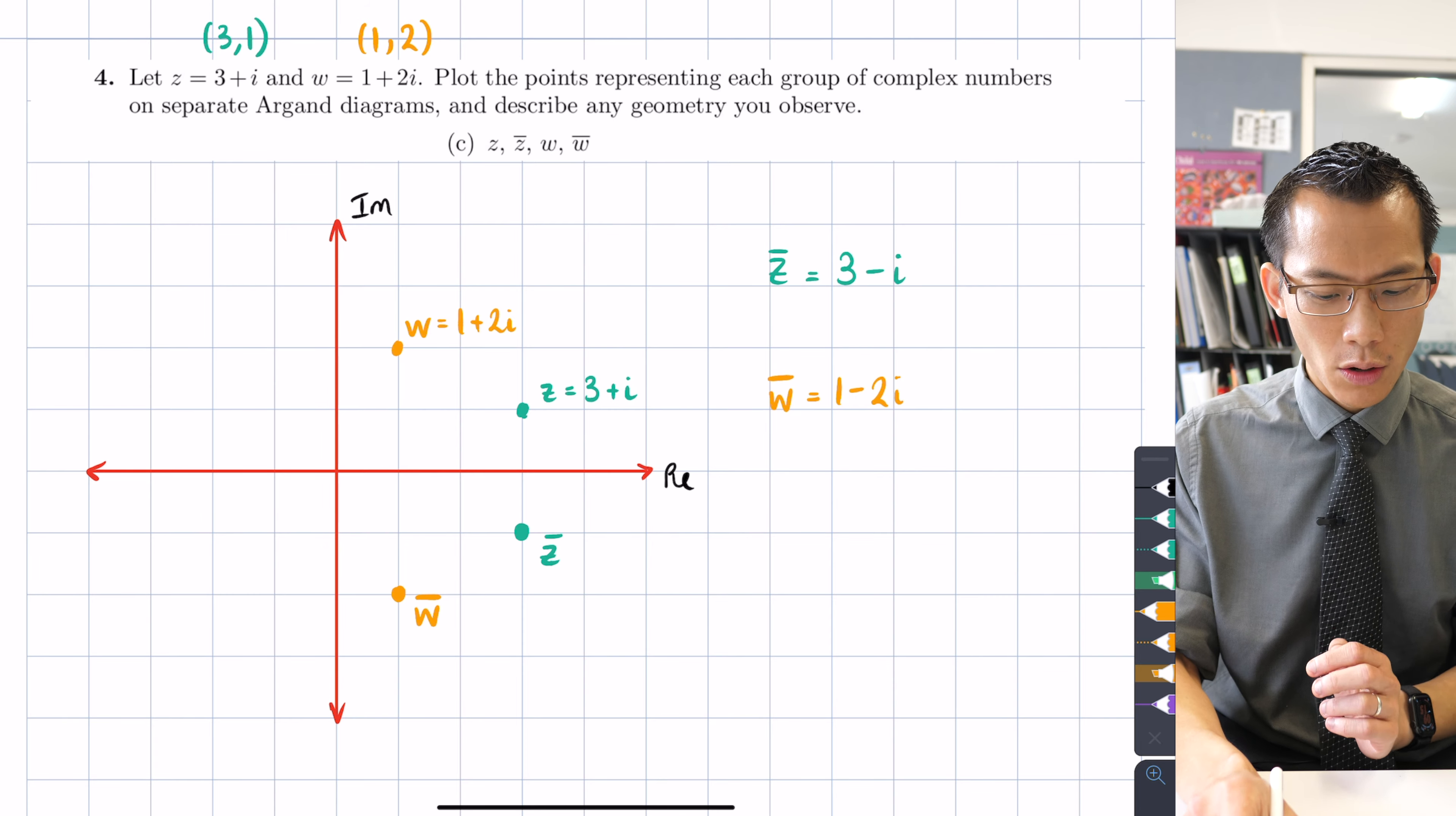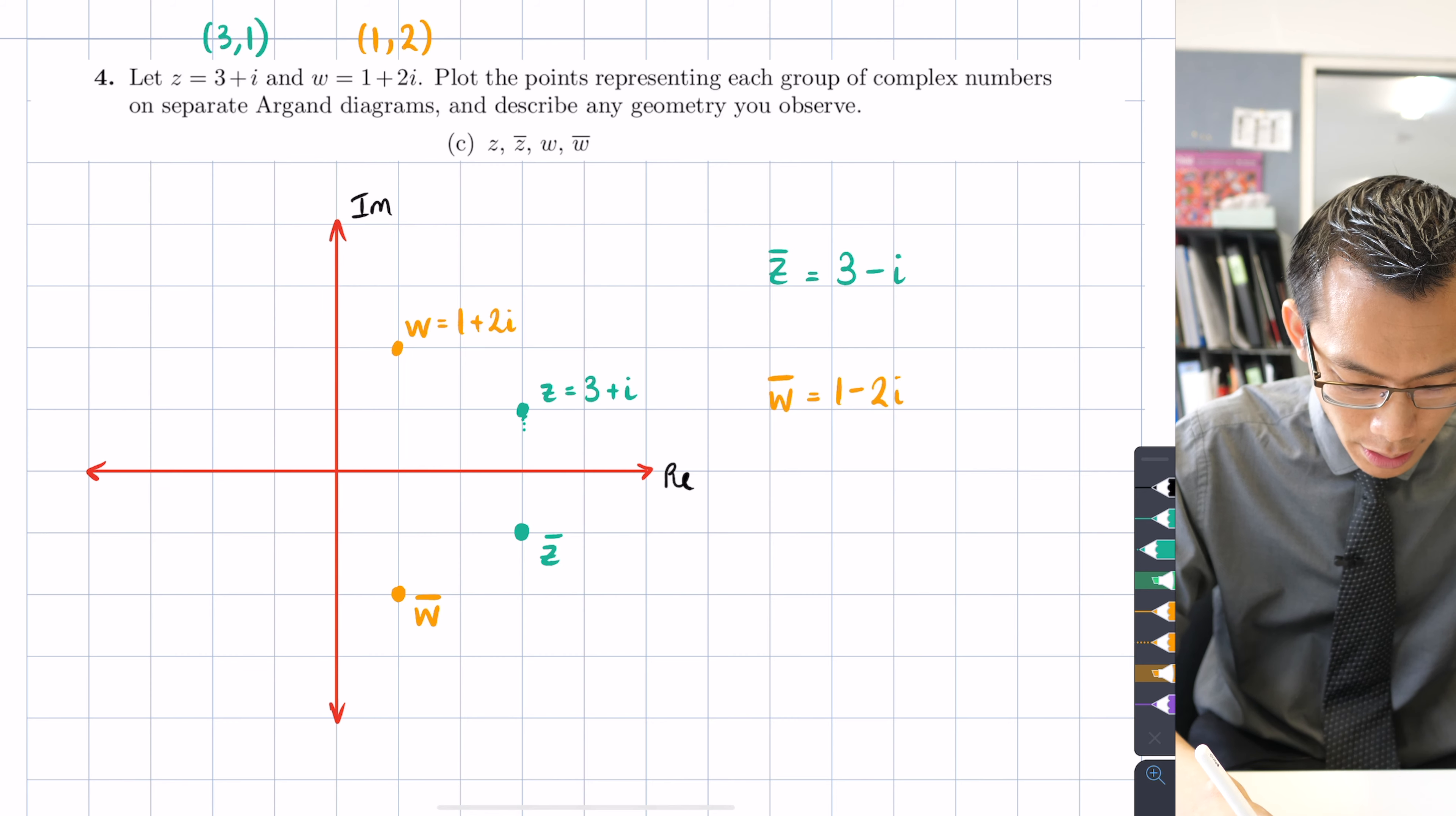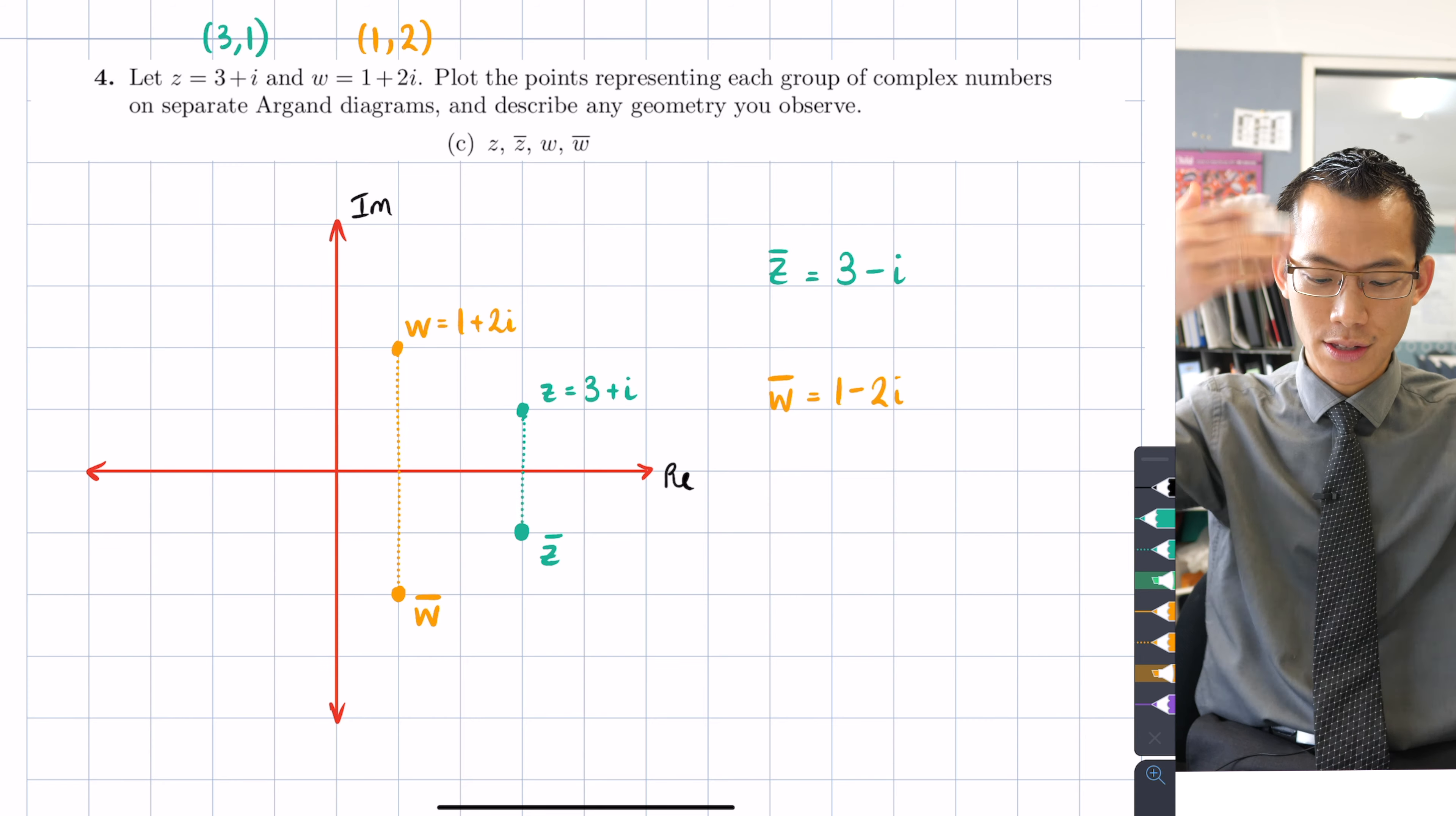Hopefully you can see here when the question then says describe any geometry you observe there's a relationship between z and z̄ that is the same as between w and w̄. Every time you take the conjugate the same thing is going on. Because you have that same x coordinate, the same horizontal coordinate, we notice that z and z̄, w and w̄ are vertically in line with each other. So you can see that sort of connection for z and then for w.